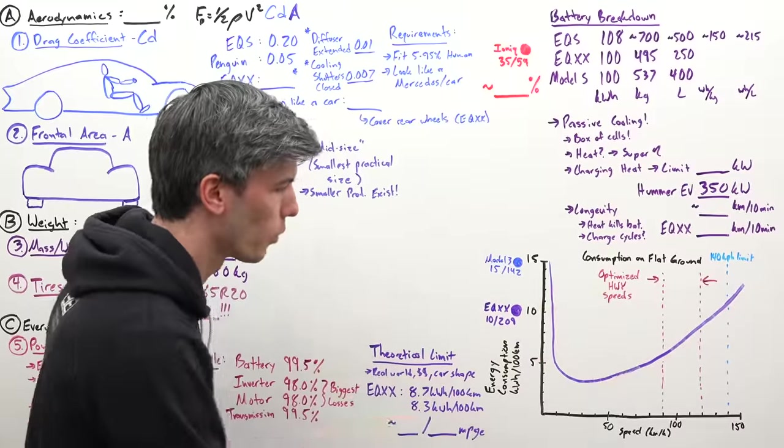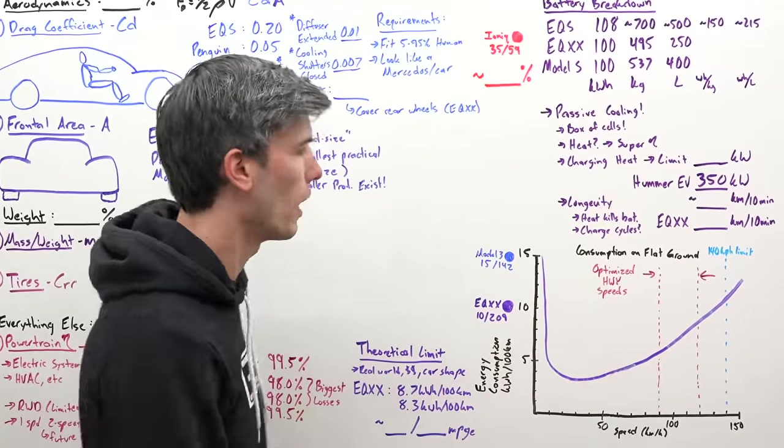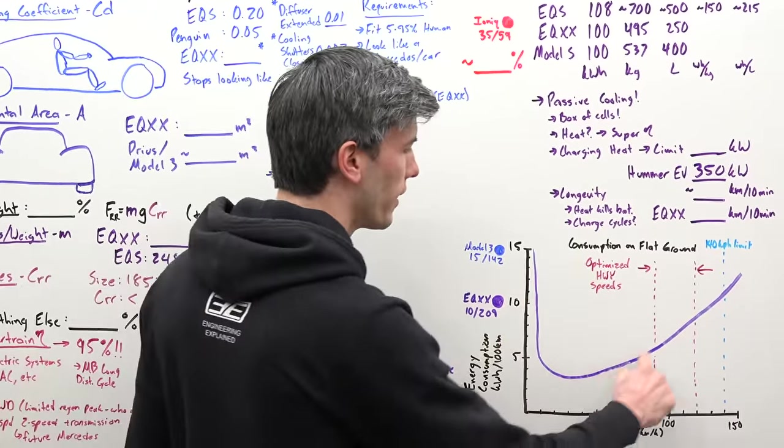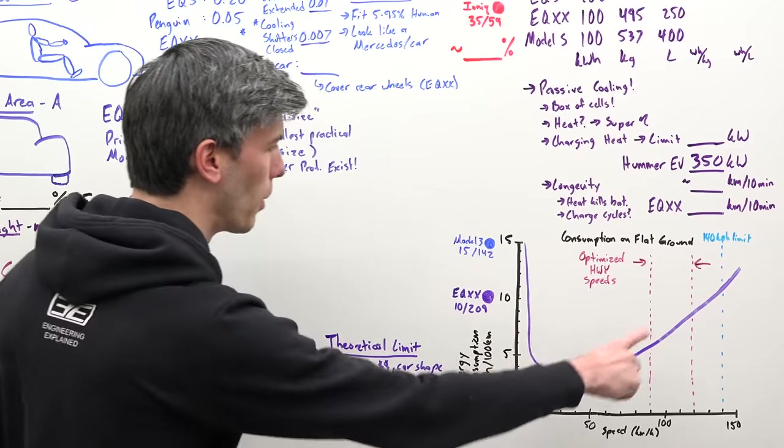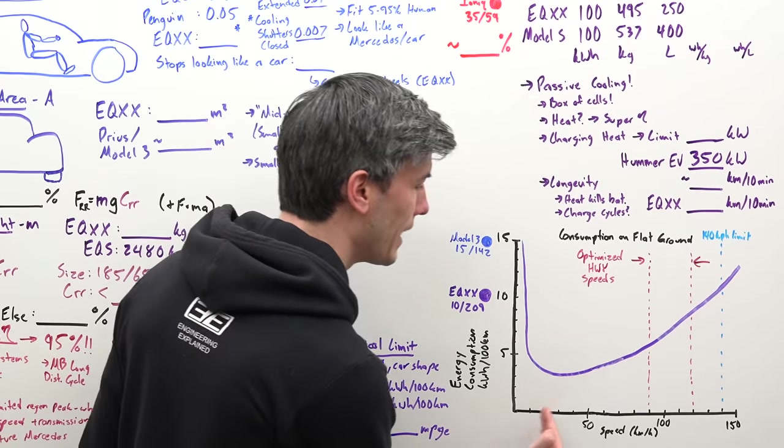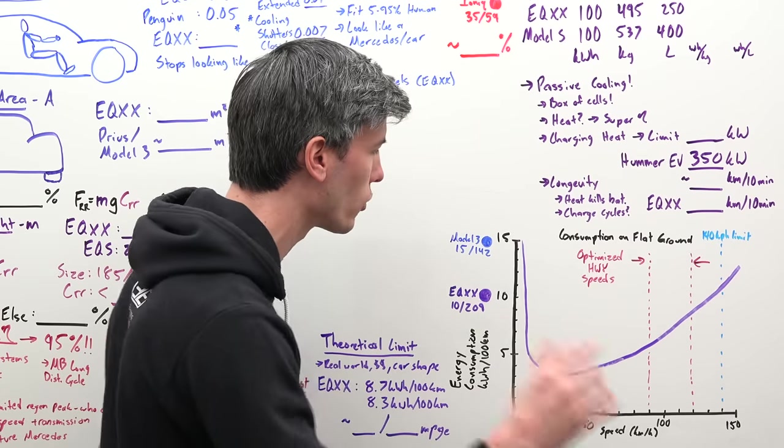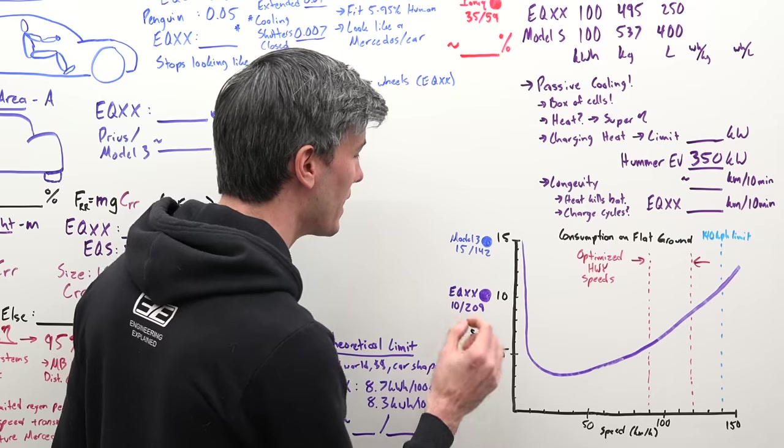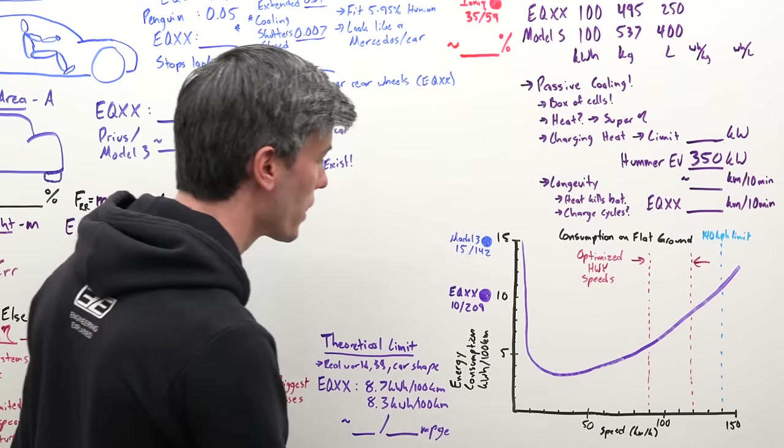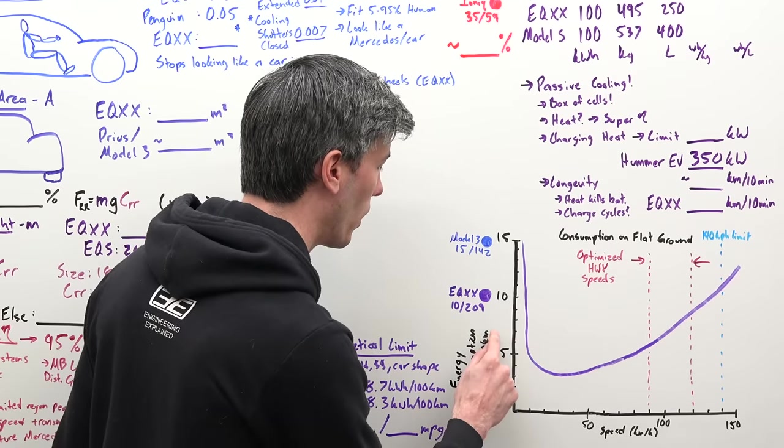To set the mood we're starting with this beautiful plot right here, focusing on this purple line. This shows us at any given constant vehicle speed while traveling on flat ground, what is our Mercedes EQXX energy consumption in kilowatt hours per 100 kilometers.